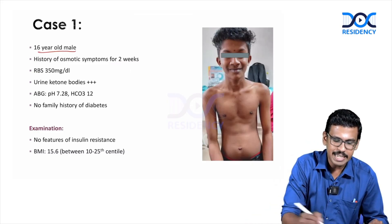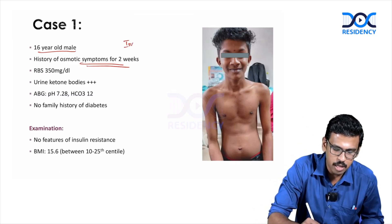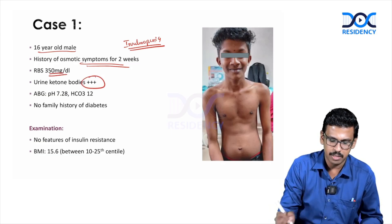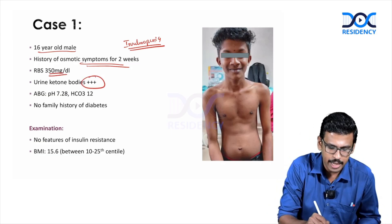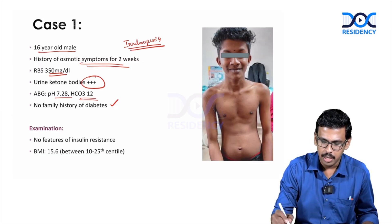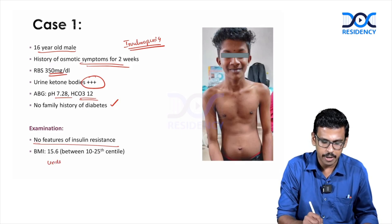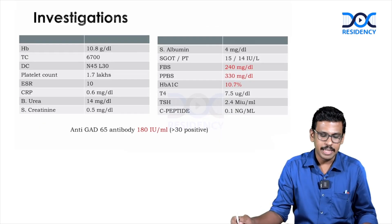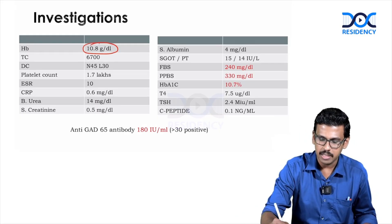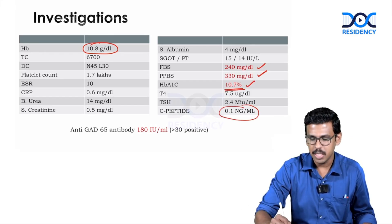Case 1: A 16-year-old male presenting with osmotic symptoms for two weeks, indicating likely insulinopenia. Blood glucose is 350, ketones are 3+. ABG shows acidosis with a bicarbonate of 12. There is no family history of diabetes. On examination, the patient is lean and underweight with no features of insulin resistance.